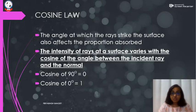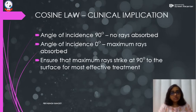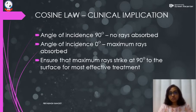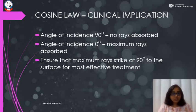The cosine of 90° is 0 and the cosine of 0° is 1. This means that when the angle of incidence is 90° to the normal, no rays are going to be absorbed, because the electromagnetic waves will be traveling parallel to the surface of the medium. Since they are traveling parallel to the surface, it becomes very difficult for these waves to penetrate inside the tissues to get absorbed and produce any effects.